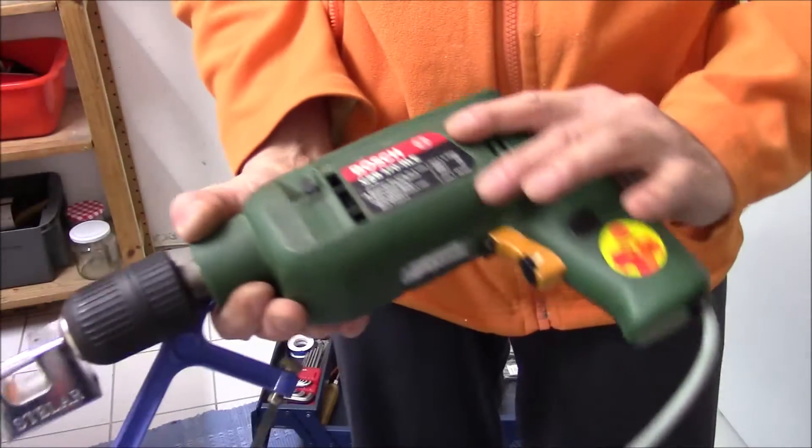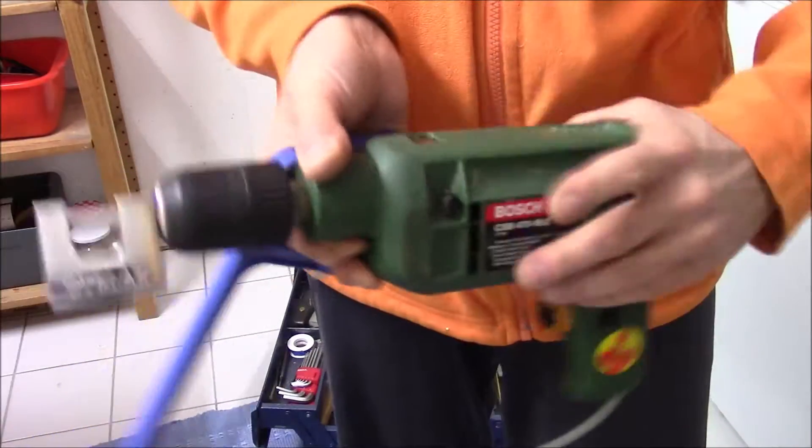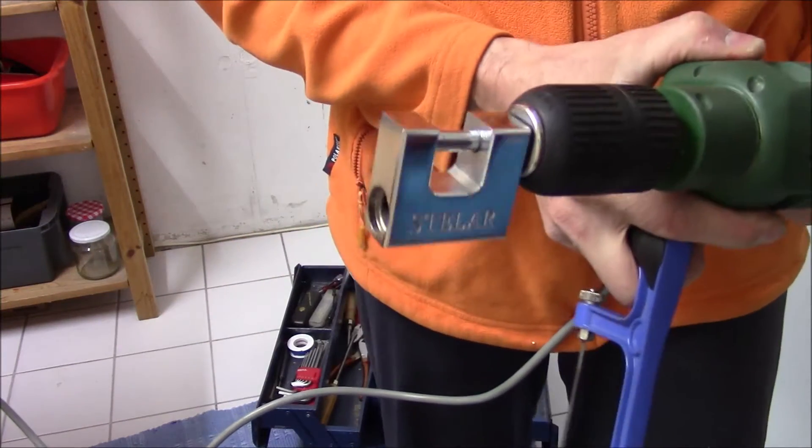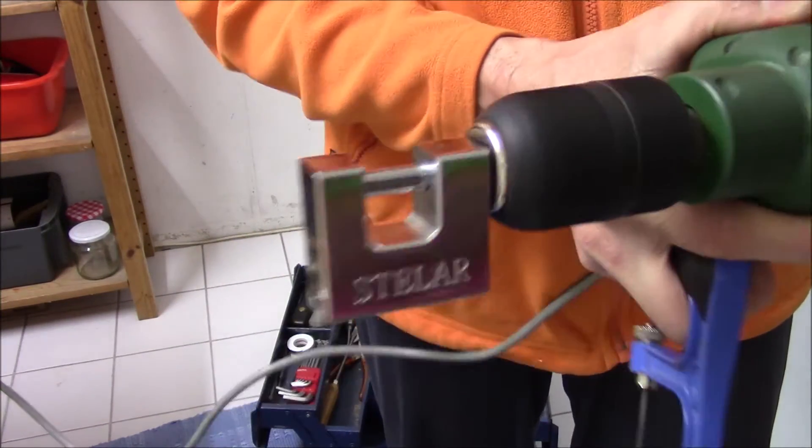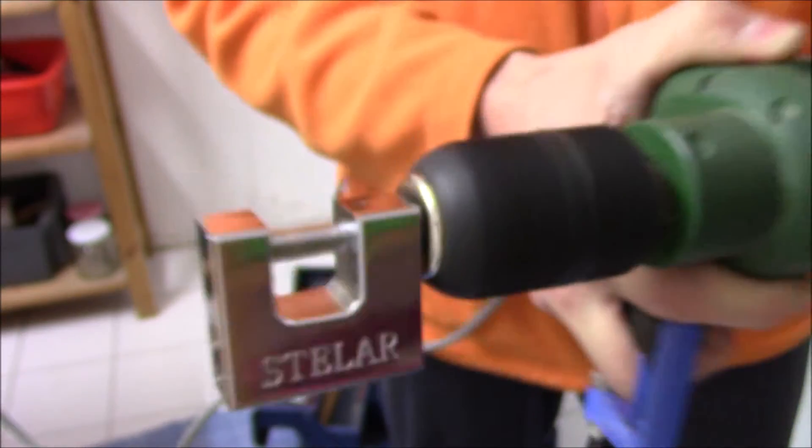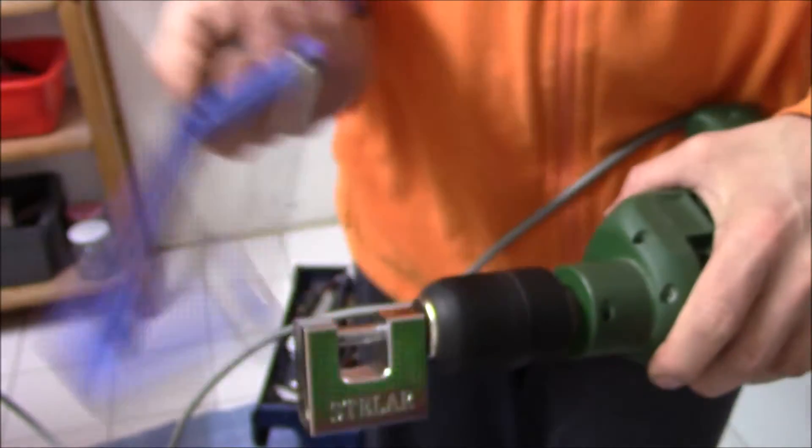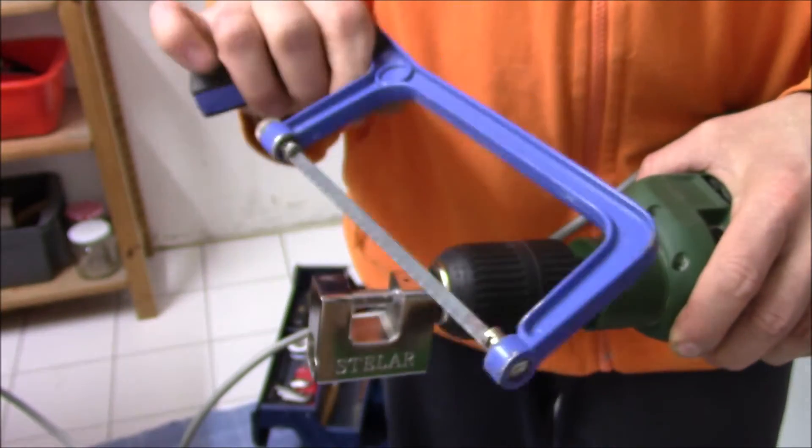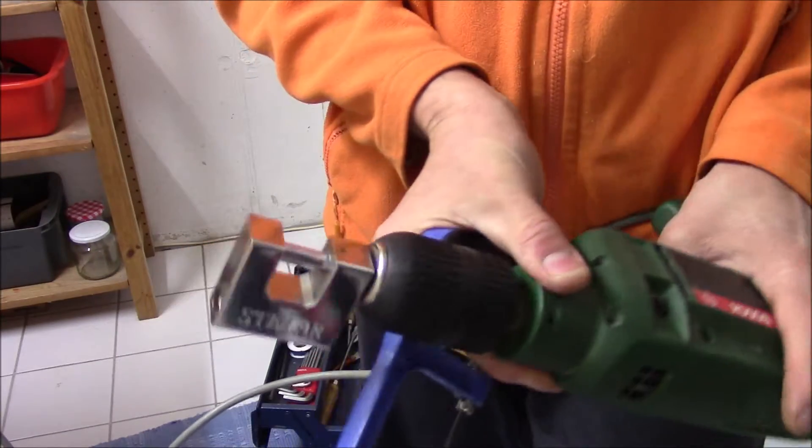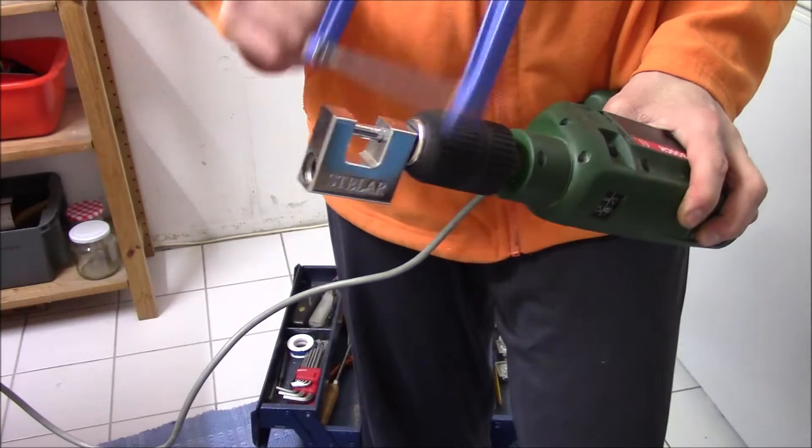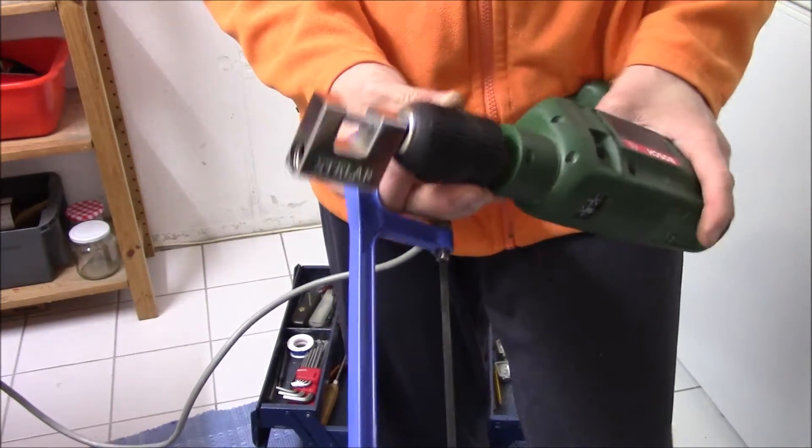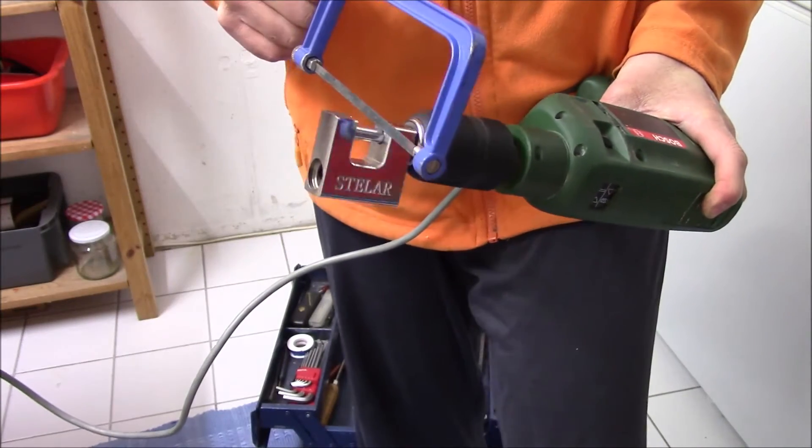So here is my setup. I have my corded drill mounted to the bolt. It spins. And here is my hacksaw with a fresh blade. It's a little bit awkward to hold this in one hand and put pressure with the saw at the same time. But I will try my best. So let's see if this works.